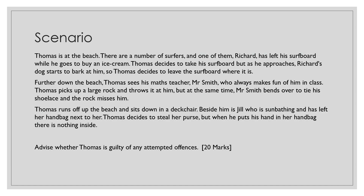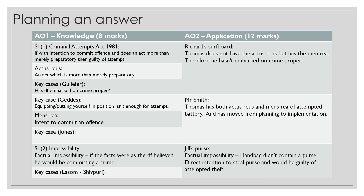The way to plan your answer is to look at the scenario and split it up into the different attempted offences — the different instances where Thomas almost committed an offence. Go ahead and write your answer to this question. In the next video I'll show how I put together my own answer and we'll analyse it. You can leave a link in the comments with your own answer and I'll mark it for you and show you how to improve. See you in the next video!